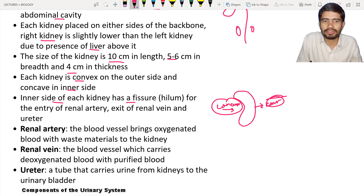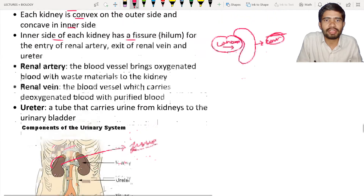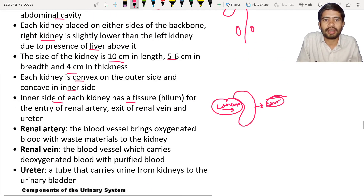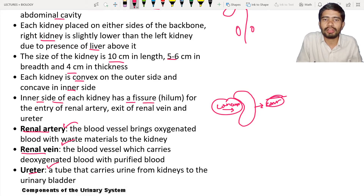The inner side of each kidney has a fissure. The fissure is the region where tubes and the ureter come out. Those tubes are the renal artery and the renal vein. So the renal artery, renal vein, and ureter are the three tubes associated with the renal fissure. The fissure is also called the hilum.